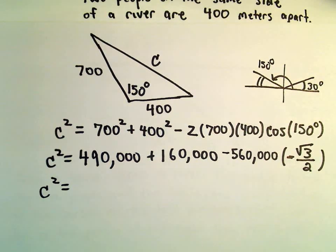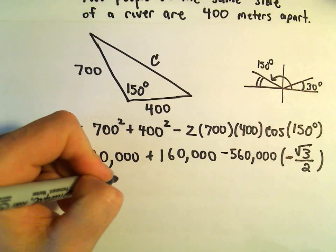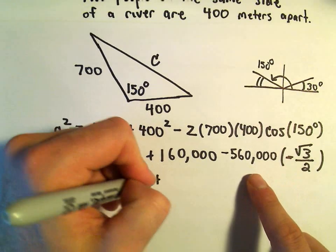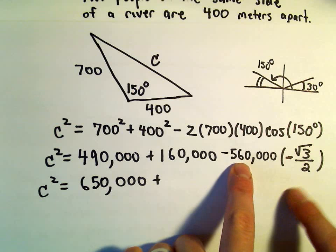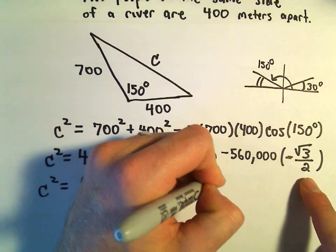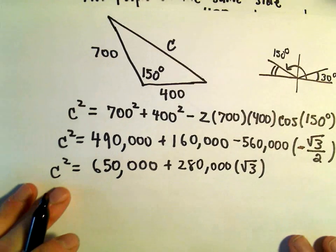So we've got 490,000 and 160,000. That's just going to be 650,000. Two negatives will make a positive. 560,000 divided by 2, that would be 280,000. We would have to multiply that still by the square root of 3.